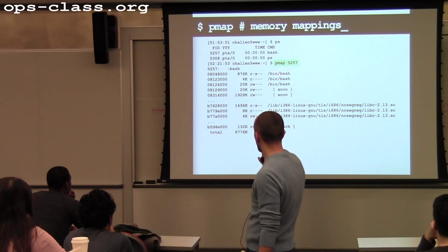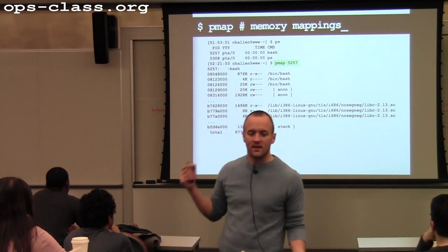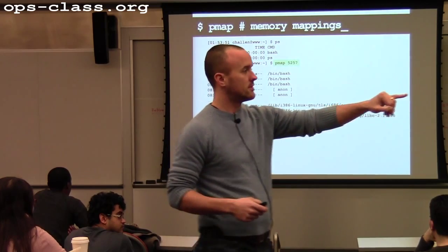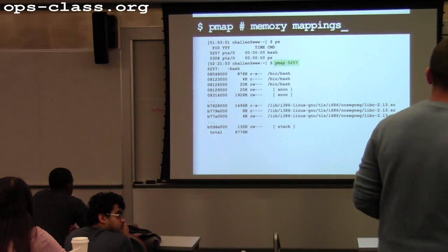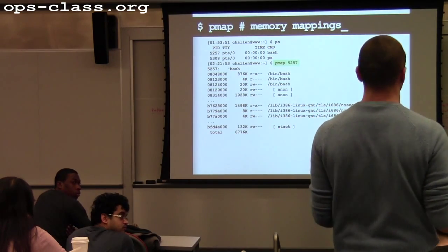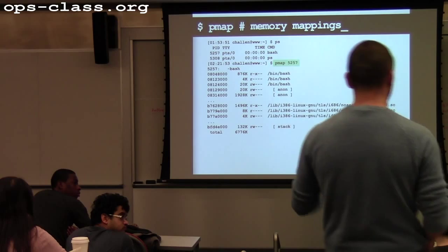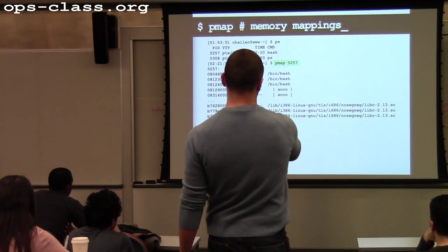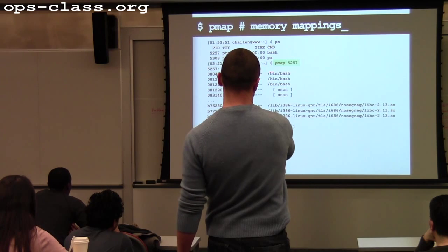And then this last thing — it's a path to an executable file. So putting it all together: there is 876k of code that was loaded from this file at this memory address, marked readable and executable. You'll see that this file is indicated several times — there are a few other regions also loaded from it.